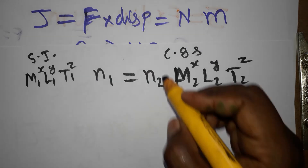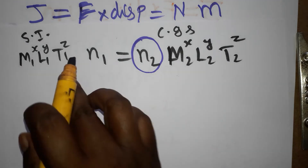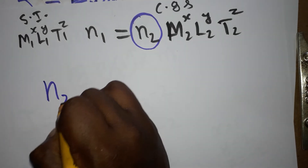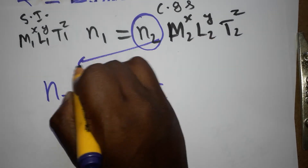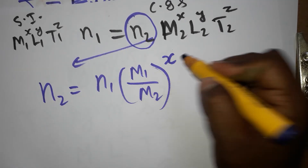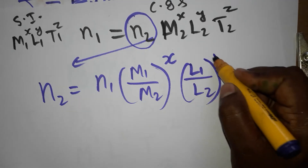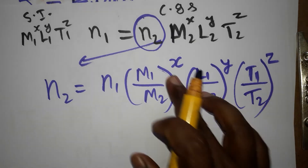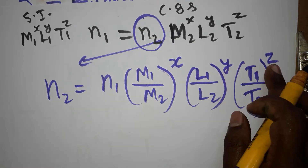We are going to find what ERG equals. ERG equals n2 times Joules, so n2 is the unknown. We write: n2 = n1 · (m1/m2)^x · (l1/l2)^y · (t1/t2)^z. The values x = 1, y = 2, z = −2 are already known.